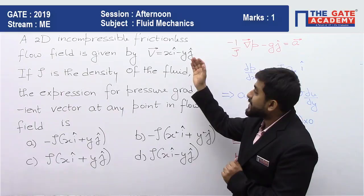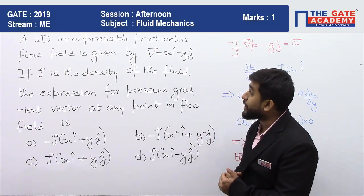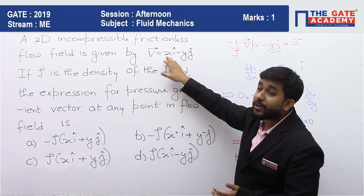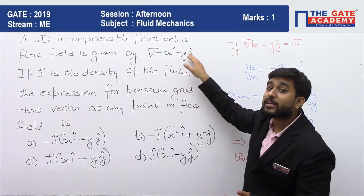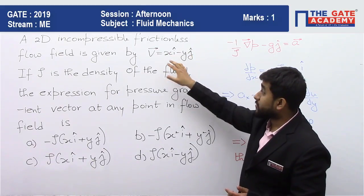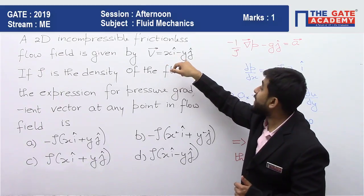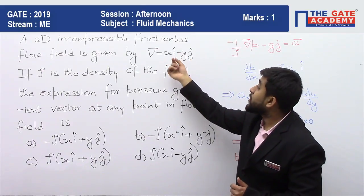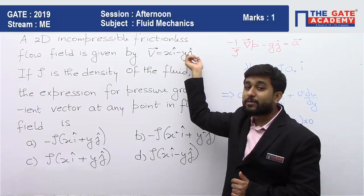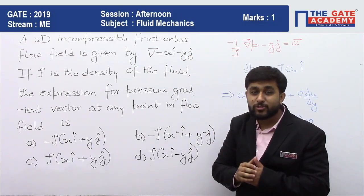So it says a 2D incompressible frictionless flow field is given by velocity vector equal to x i cap minus y j cap. This velocity vector has two components, one is along the x dimension and the other one is along the y dimension. So this becomes your u and the other one becomes your v, here w is equal to 0.